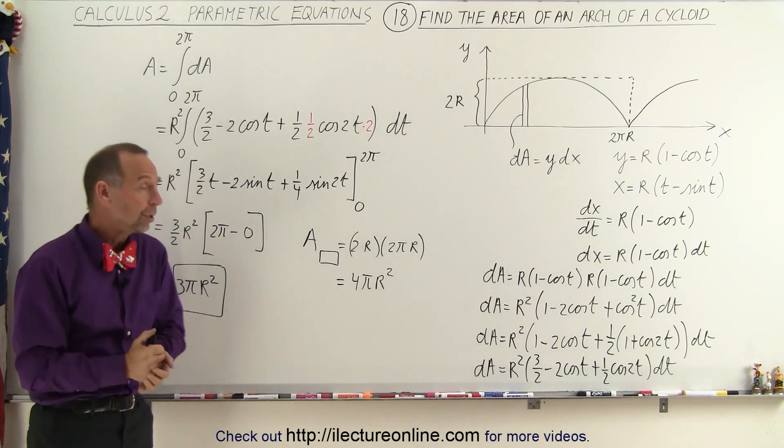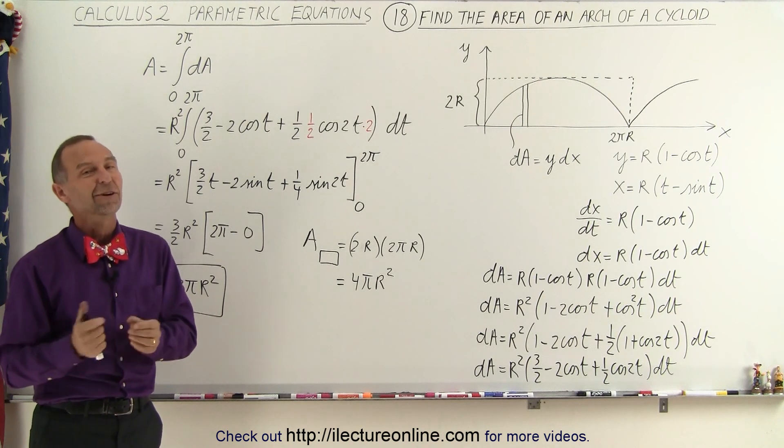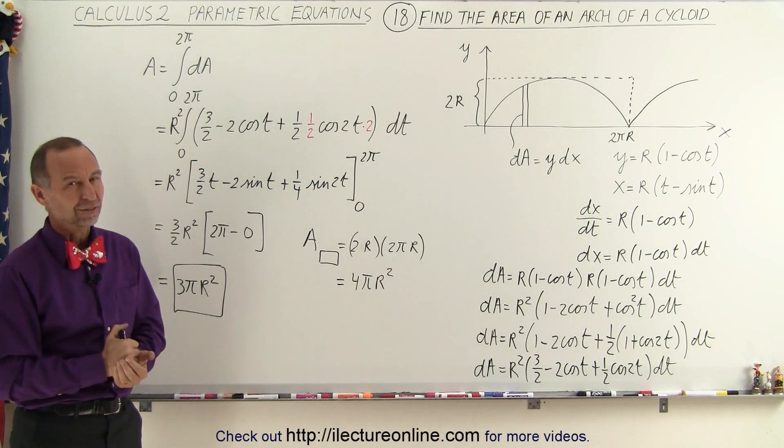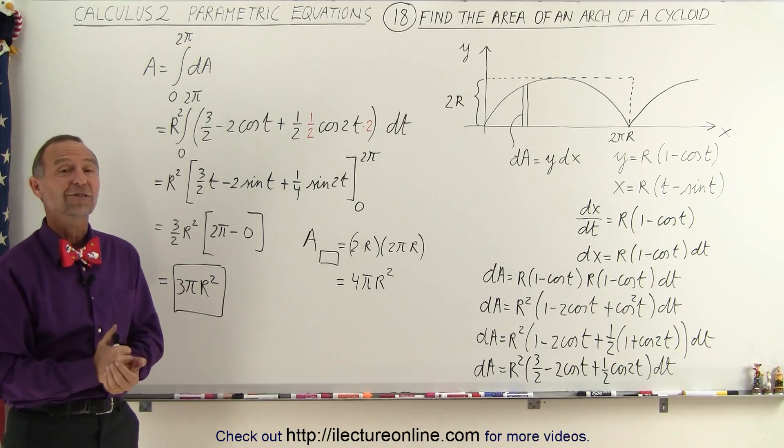When you eyeball it, that looks pretty close. So we're fairly confident that this is either the exact correct answer or something pretty close to it. I got the suspicion it's correct. Anyway, that's how we find the area of the arch of a cycloid.